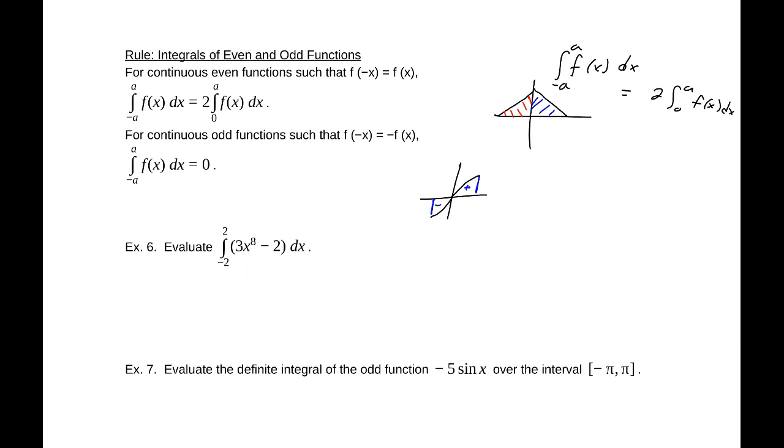So 3x to the 8th minus 2. This one happens to be an even function, so what we can do is take 2 times the integral from 0 to 2 of 3x to the 8th minus 2. That will be x to the 9 over 9, so that would end up being, 3 would cancel out, we get x to the 9th over 3 minus 2x from 0 to 2. Evaluating at 0 does nothing, so evaluating at 2 gets us 500 over 3.